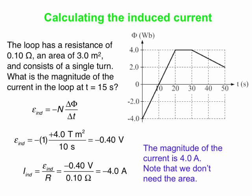Note that we were given the area but didn't need it to calculate current. All we needed was the slope of the flux graph read off the graph, a particular time to evaluate that slope, and the resistance to connect voltage to current. Sometimes we're given information we don't need, and this is one of those cases. That's all for our quick look at graphical interpretations of Faraday's Law and Lenz's Law.